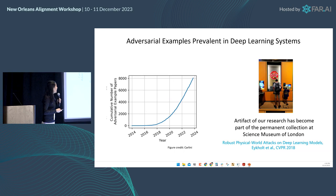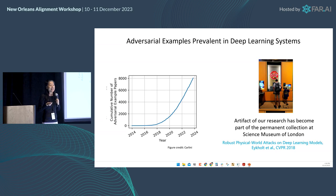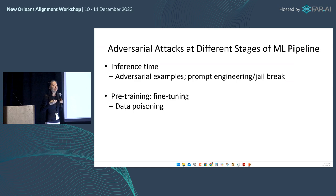It's great to see that the number of papers has increased exponentially in the area of adversarial examples, and this work has also helped raise a lot of awareness in the public. Adversarial attacks can happen at different stages of machine learning pipelines, including at inference time as well as pre-training and fine-tuning stages.